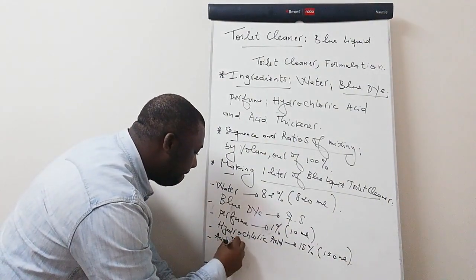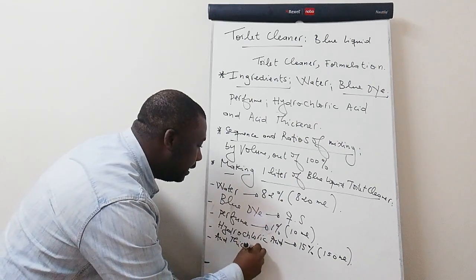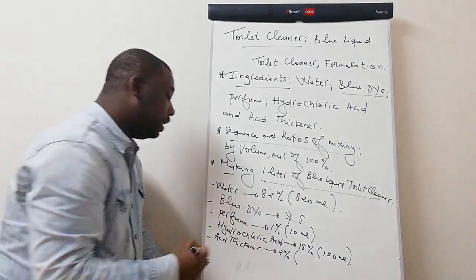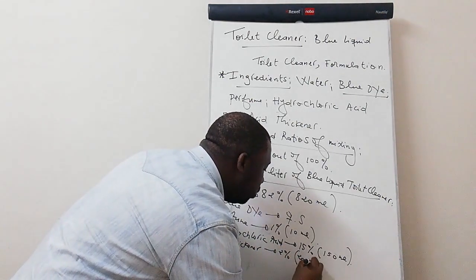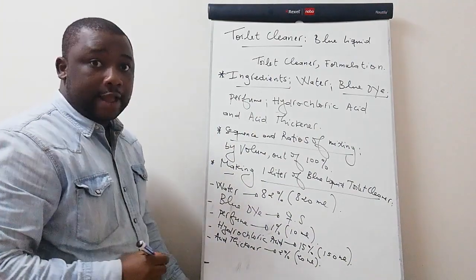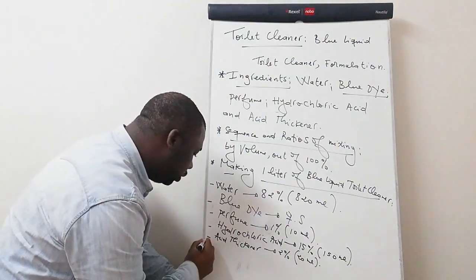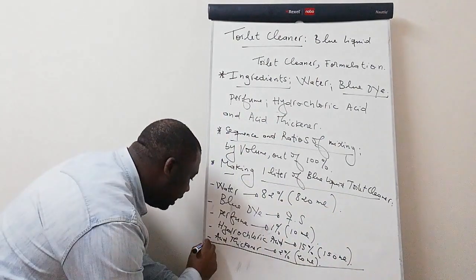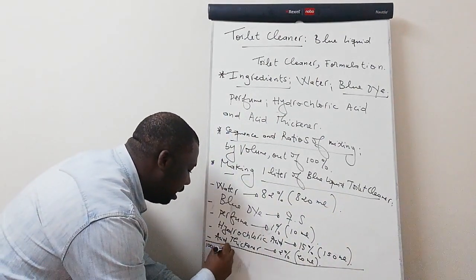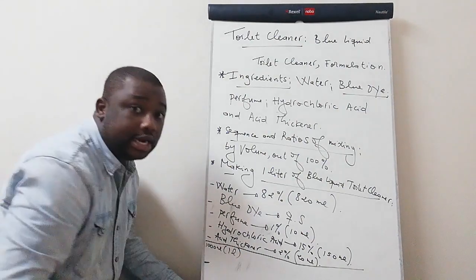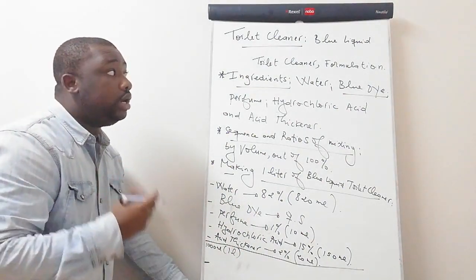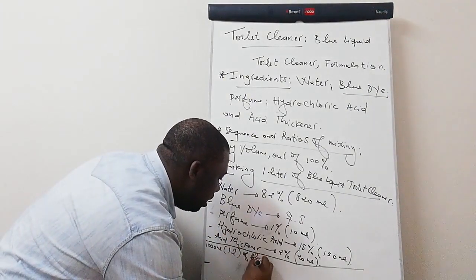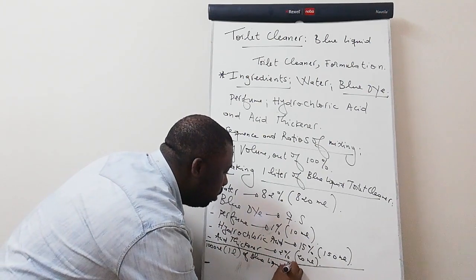The last ingredient is your acid thickener. The acid thickener should be 2% of the total volume — out of one liter, you need 20 ml of acid thickener. By doing this you obtain 1000 ml, which is actually one liter of your blue liquid toilet cleaner.